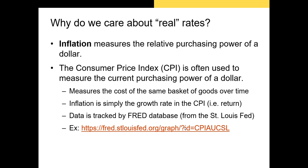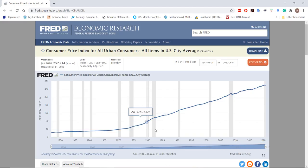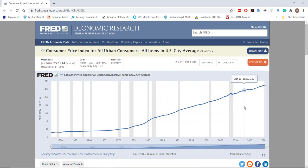We measure inflation using the Consumer Price Index, or CPI. The CPI is tracked and reported by the Federal Reserve on their FRED website. It tracks the cost to purchase the same basket of goods over time. If the cost rises, that means the dollar is depreciating and inflation is rising. Here we have the Consumer Price Index on the FRED database, and as you can see, it's steadily increasing with a couple of decreases here and there.